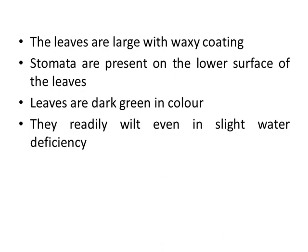Mesophytes کے land plants ایسی جگہوں میں پائے جاتے ہیں جو نہ خشک ہوں اور نہ گیلی۔ یہ hydrophytes اور xerophytes کے درمیانی ہیں۔ ان میں stem اوپر کی جانب سیدھا ہوتا ہے۔ ان کے leaves بڑے ہوتے ہیں اور ان پر wax کی coating ہوتی ہے۔ Stomata leaves کے lower epidermis پر پائے جاتے ہیں۔ Leaves کا color dark green ہوتا ہے اور یہ تھوڑی سی پانی کی کمی پر مرجھا جاتے ہیں۔